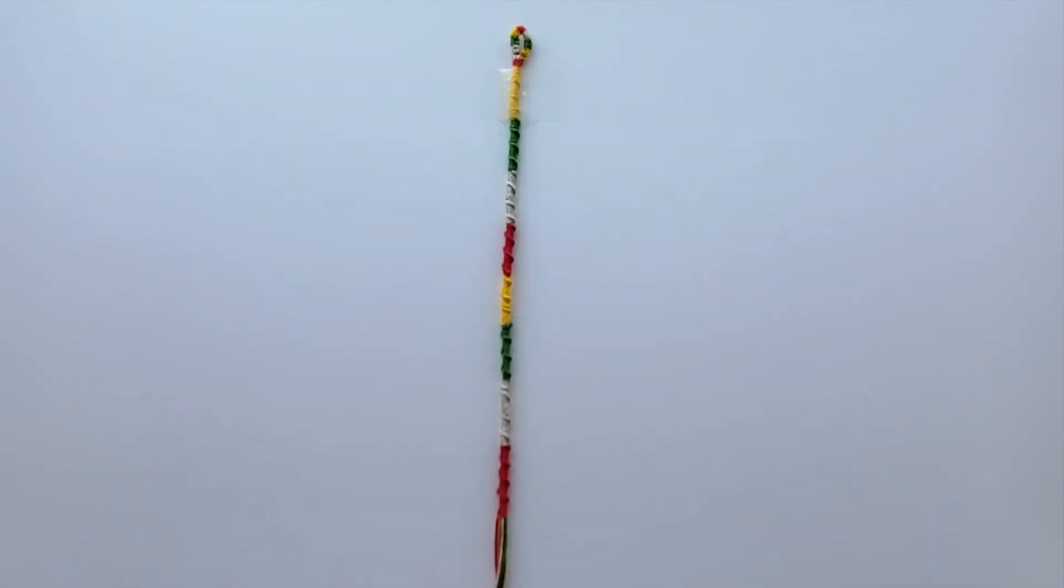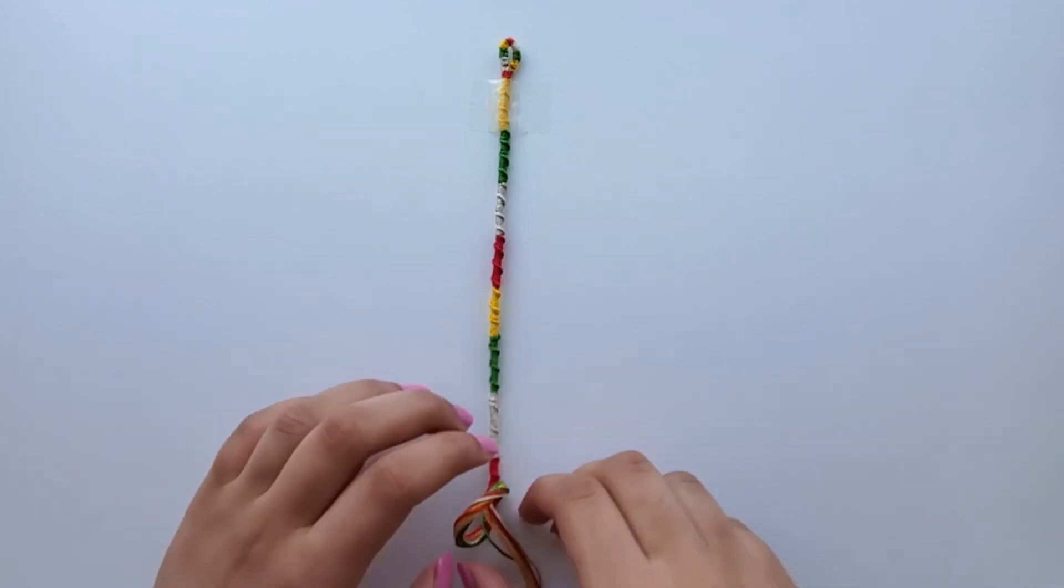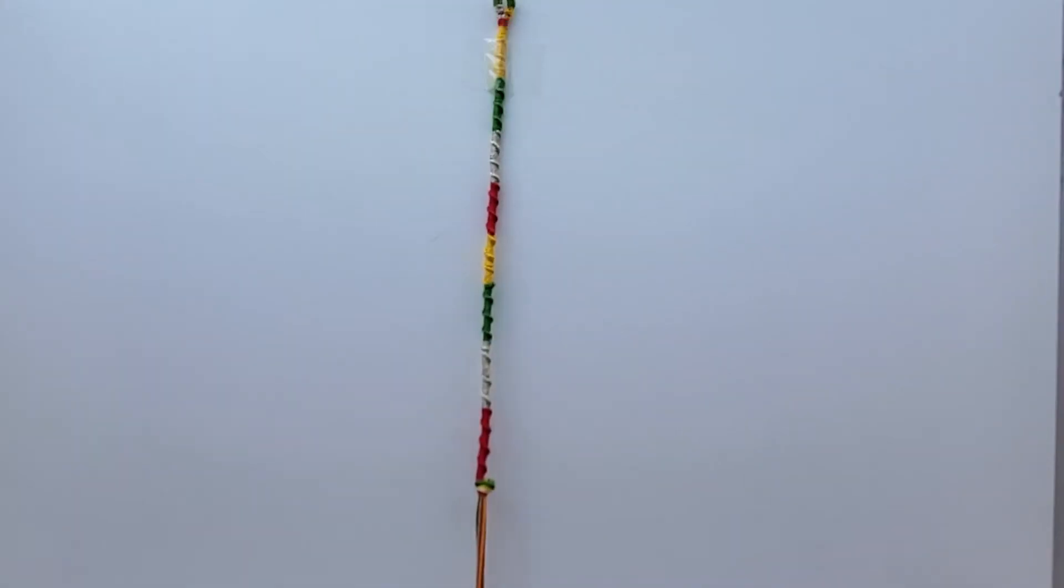Once your bracelet is long enough to go around your wrist like mine is, tie a knot at the end to complete the bracelet. And then also make sure to cut off the extra strings.